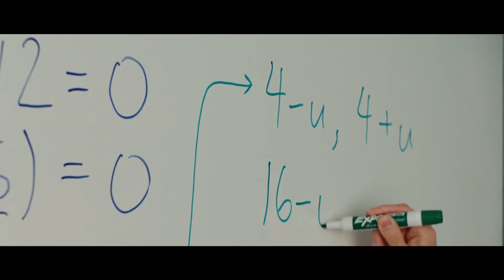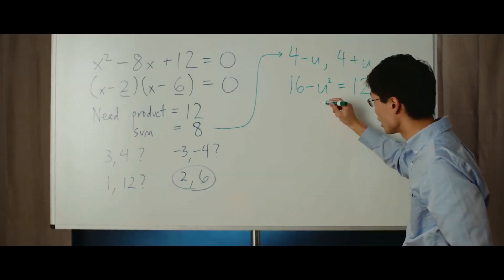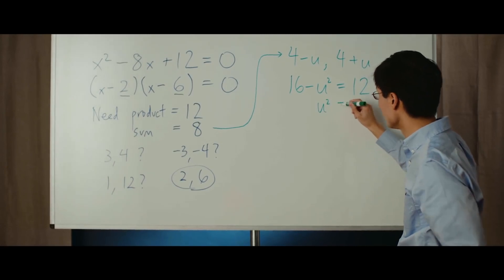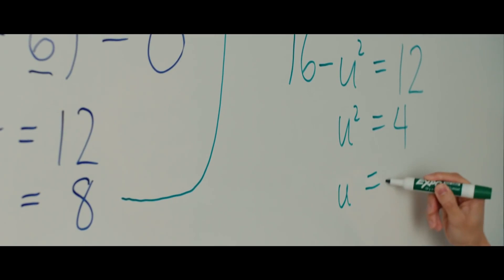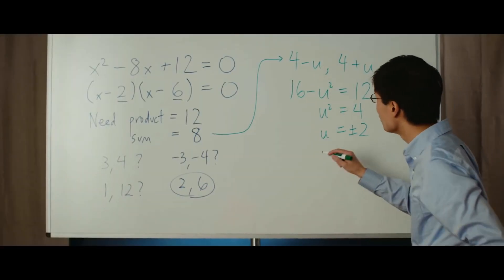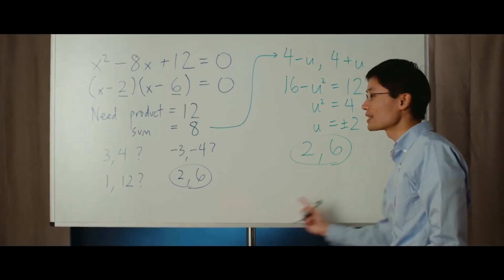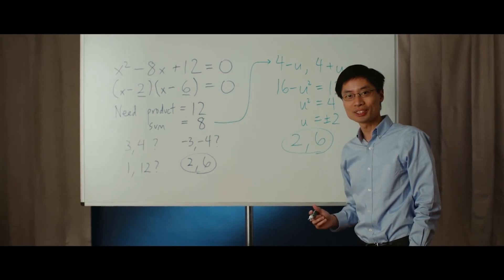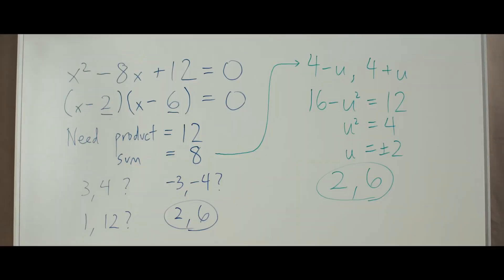I need to get a u so that 16 minus u squared is 12. That comes when u squared equals 4, and that comes when u is either plus or minus 2. Whichever one of those you take, you will get that the two numbers are 2 and 6. And those are the two numbers that add to 8 and multiply to 12 — with no guessing. Because this method solves the problem by starting from the sum, it can be used to solve any quadratic equation.